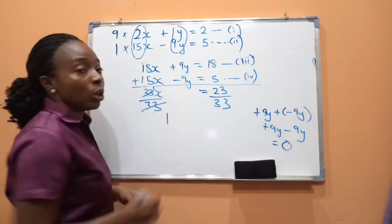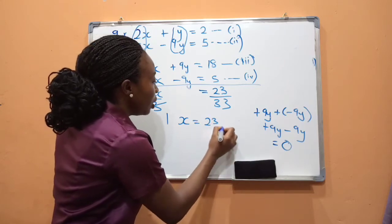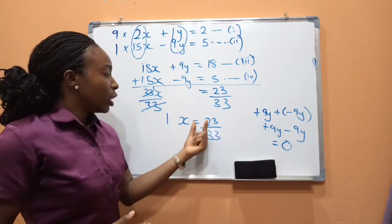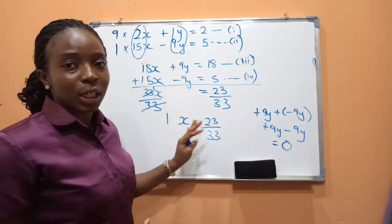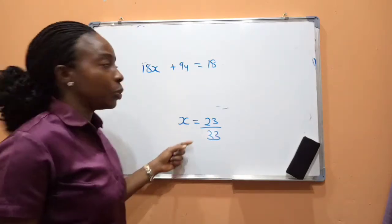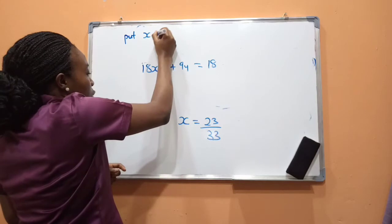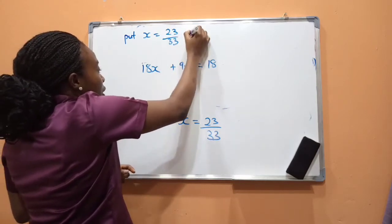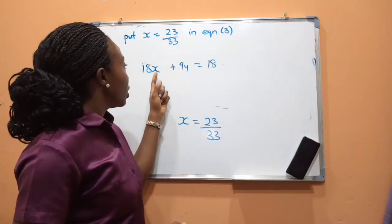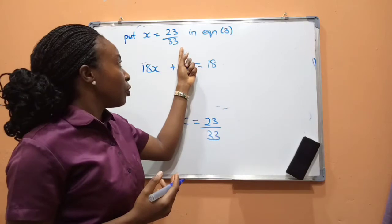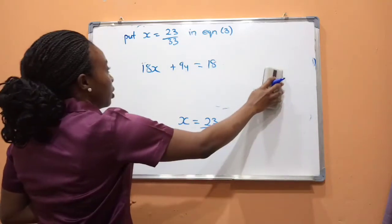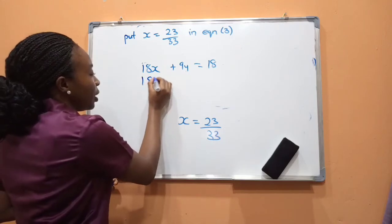We check whether 23/33 can be simplified — there is no common factor, so we leave x = 23/33. Now let's solve for y by substituting x = 23/33 into equation 3: 18 × (23/33) + 9y = 18. You can substitute into any equation; I choose equation 3.